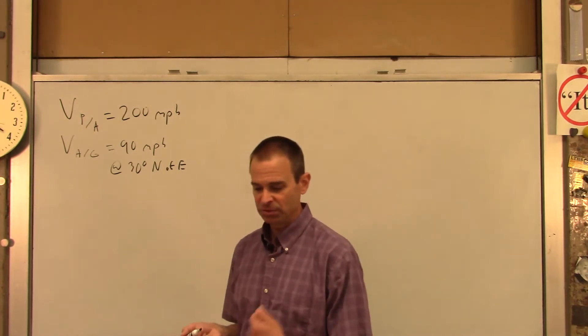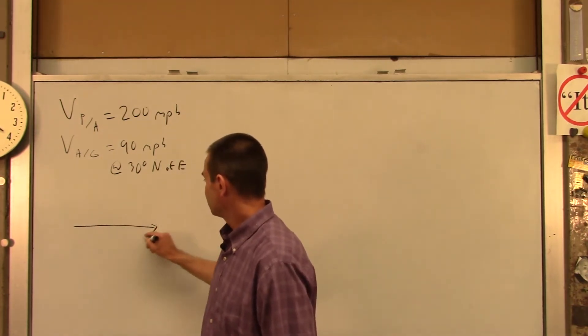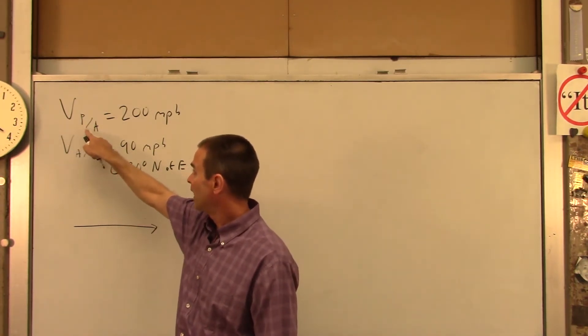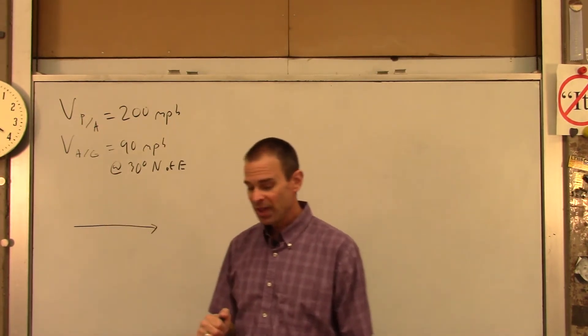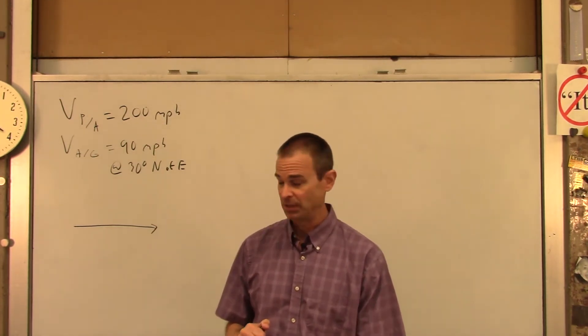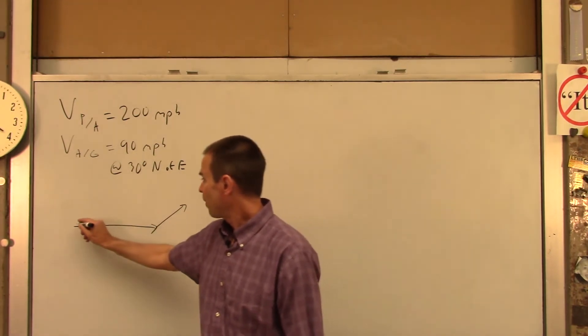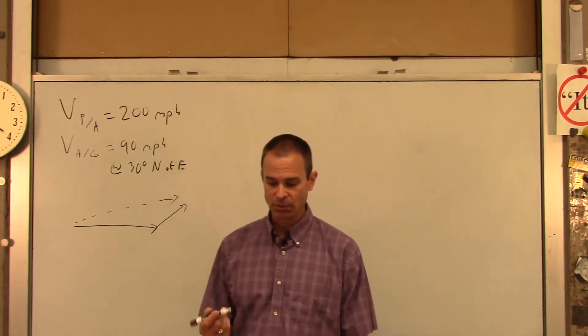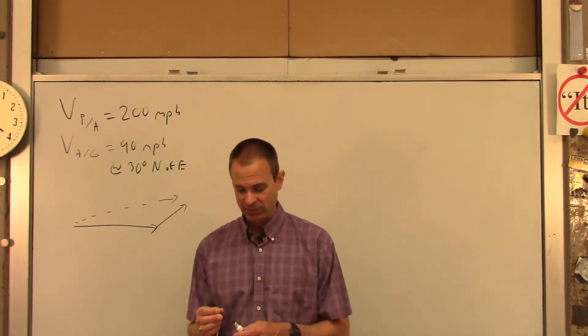So right now if the pilot just pointed his plane due east, that would be that. And then you'd have the wind blowing on them. So if you add the velocity of the plane with respect to the air plus the velocity of the air with respect to the ground, you'll get the velocity of the plane with respect to the ground, otherwise known as his ground speed. So if you add the velocity of the air like such, the pilot would go like that. His ground speed or his ground velocity would not be due east.